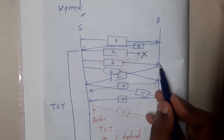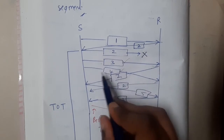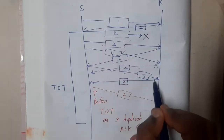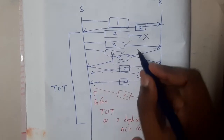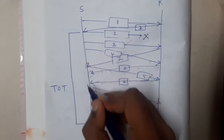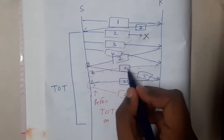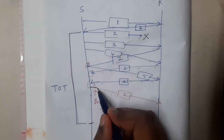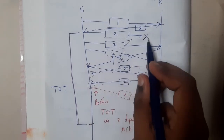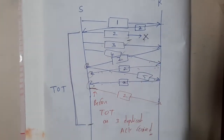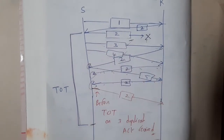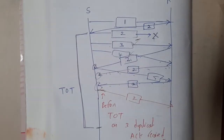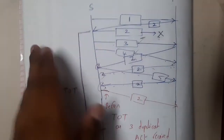Once packet 3 is received, the receiver says 'please send packet 2 again.' Once packet 4 arrives, it again asks for packet 2. When packet 5 arrives, it asks once more. Now I have received three duplicate acknowledgements for the same packet number. Even though the timeout timer hasn't expired, I resend the packet assuming it was corrupted or lost. This is the three duplicate acknowledgements concept — retransmission is triggered before the timeout timer expires.